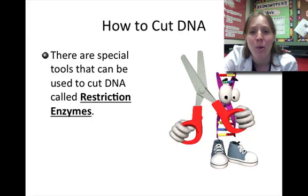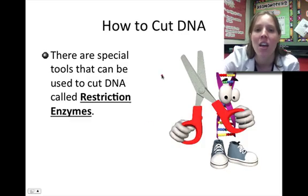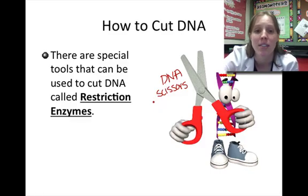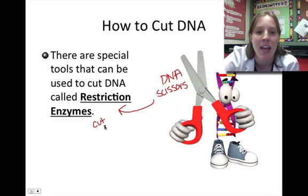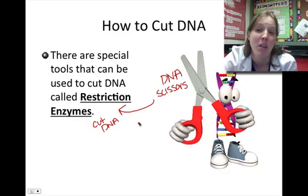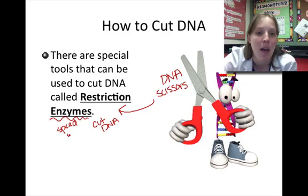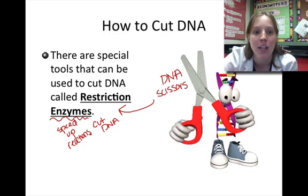In order to engineer — to mess with genes — I have to have a way to cut DNA. What I need are some DNA scissors. In biotechnology, there's a specific type of molecule that can act as DNA scissors. These molecules are called restriction enzymes, and their job is to cut DNA from different organisms so that we can possibly combine DNA from different living things. Remember, enzymes are molecules that speed up — that catalyze — chemical reactions. So in this case, a restriction enzyme is a molecule that speeds up a reaction that cuts DNA.